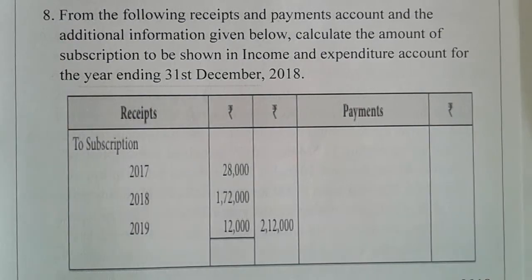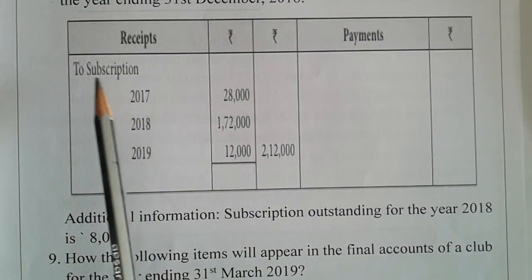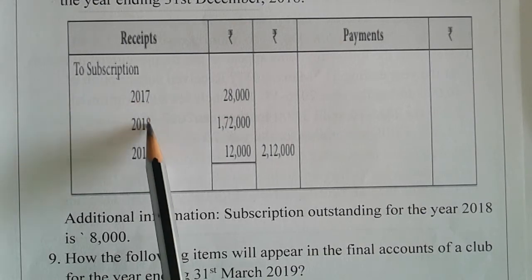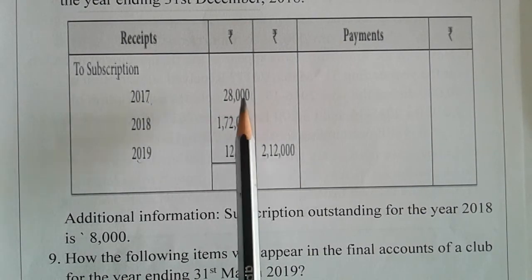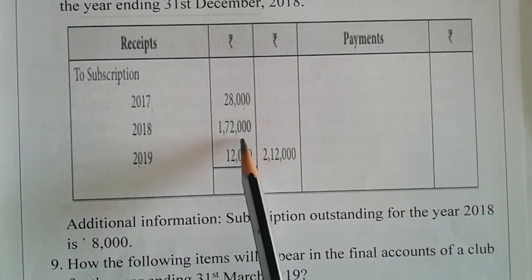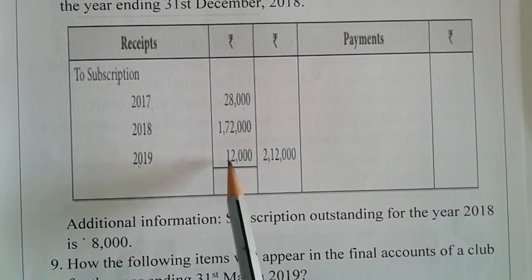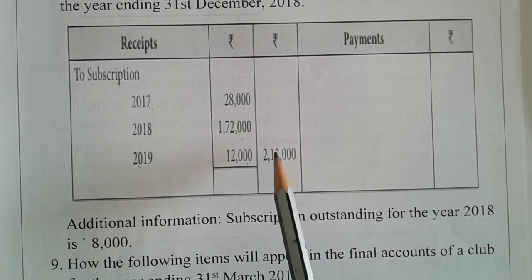This is the receipt and payments. In the receipt, the subscription figures are: 2017 is $17,000; 2018 is $1,72,000; 2019 is $12,000. Total is $21,000.